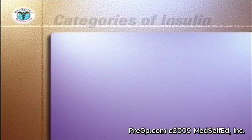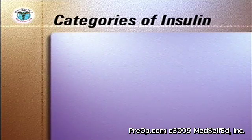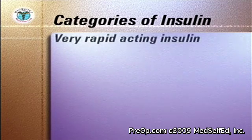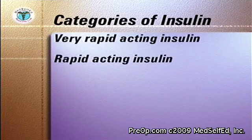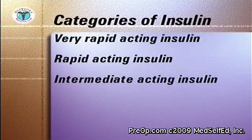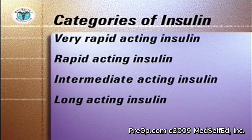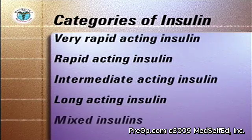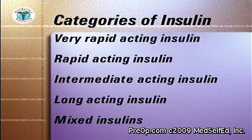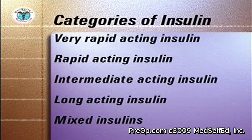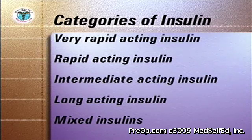There are four categories of insulins depending on how quickly they start to work in the body after injection: very rapid acting insulin, regular or rapid acting insulins, intermediate acting insulins, and long acting insulin. In addition, some insulins are marketed mixed together in different proportions to provide both rapid and long acting effects. Certain insulins can also be mixed together in the same syringe immediately prior to injection.